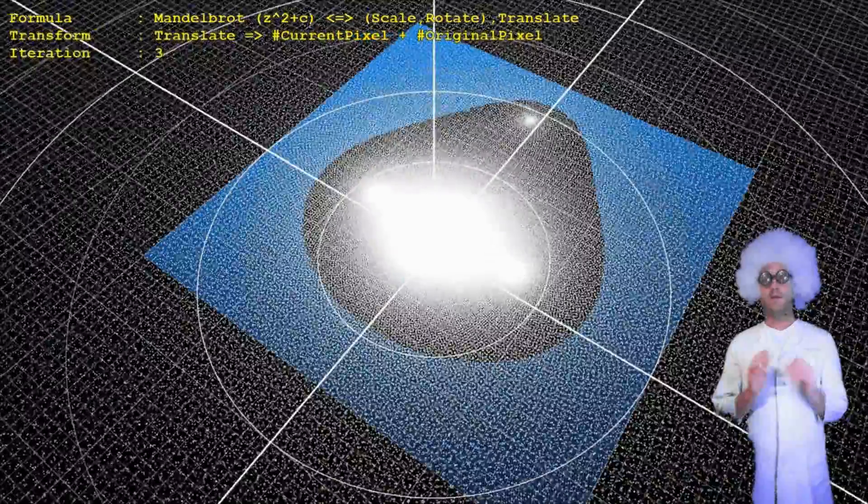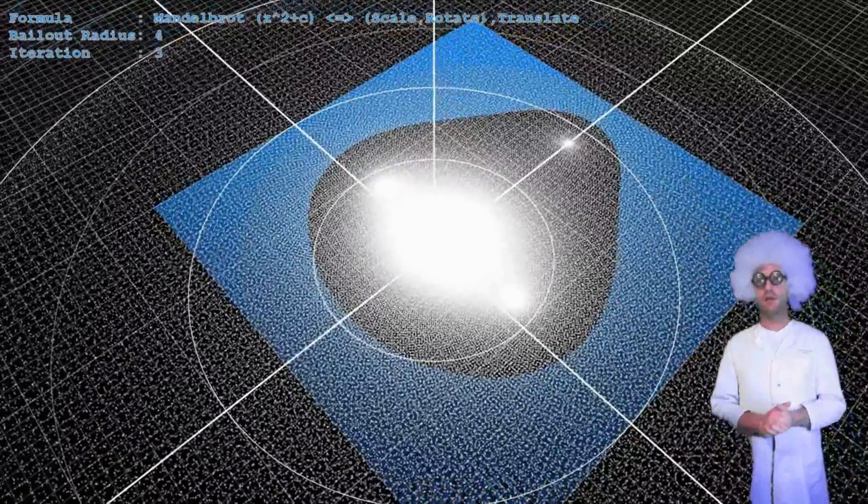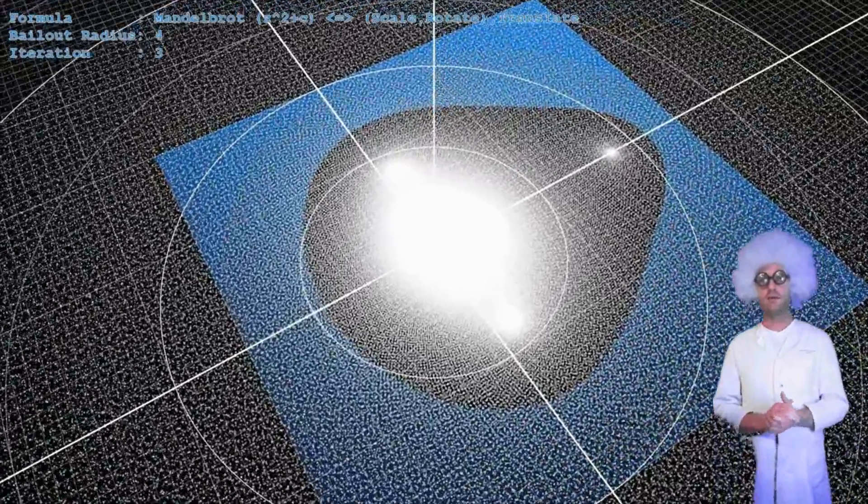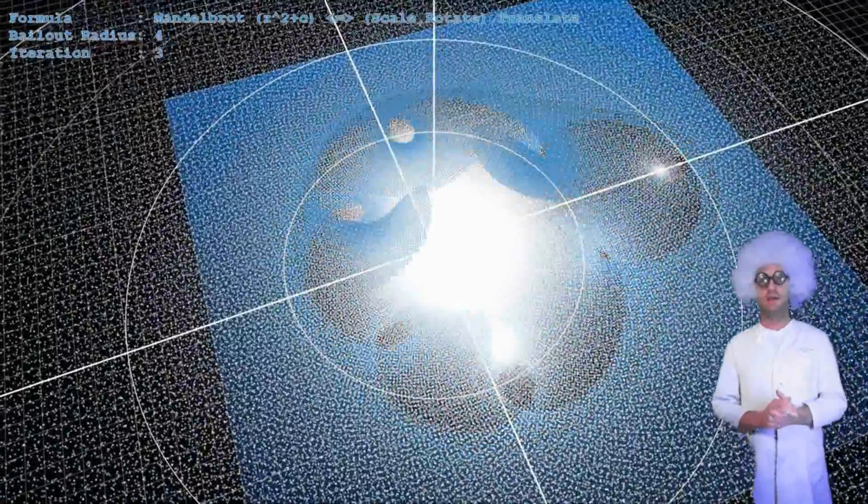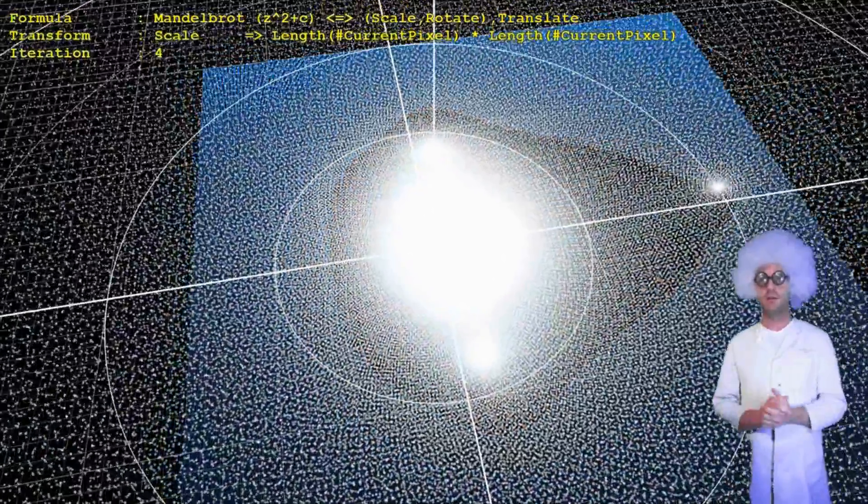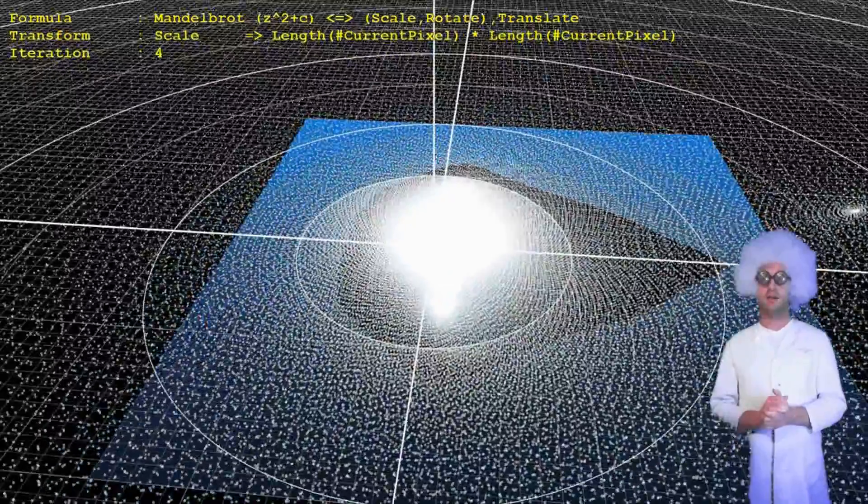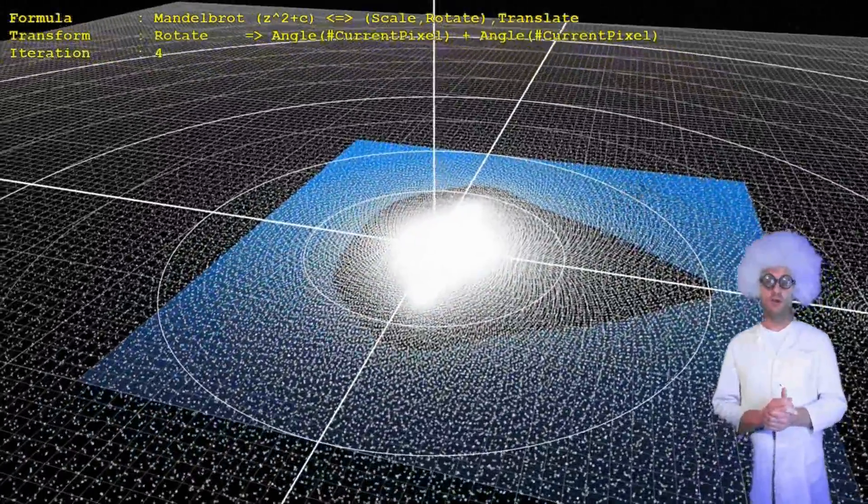In our visualization, the two-dimensional points move into the third dimension to indicate the overall distance the points move. The larger the distance, the higher the points jump.